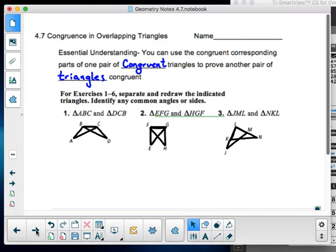So here, for exercise 1 through 6, separate and redraw the indicated triangles. Identify any common angles or sides.